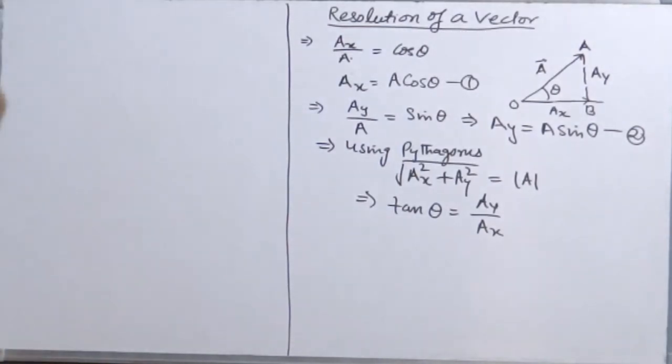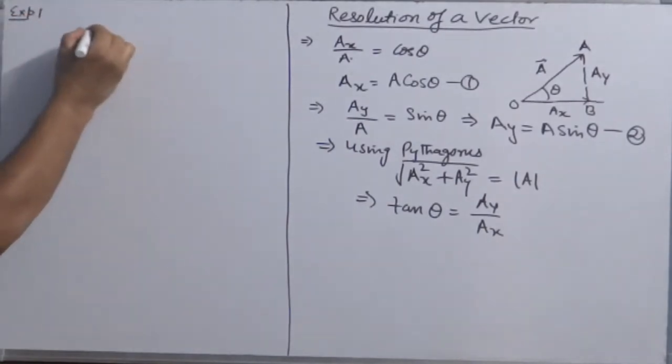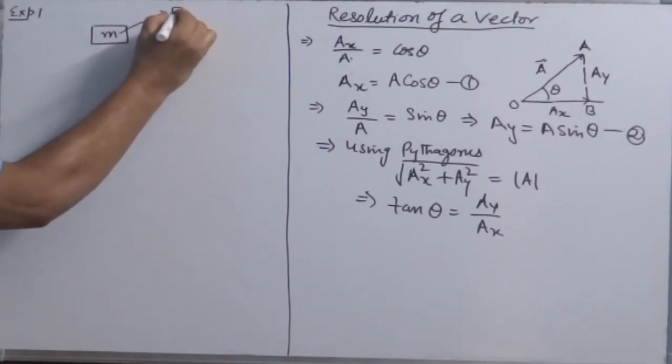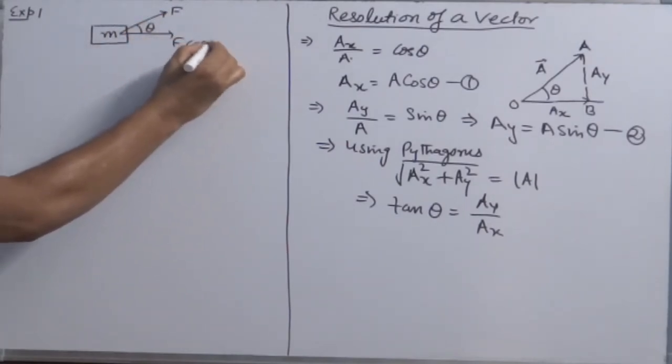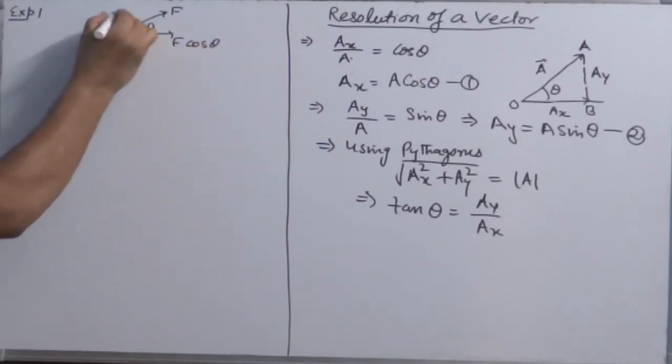Let's see examples in physics. Example number 1. This is an object. And if I want to pull an object of mass M, we always apply force in our day-to-day life with an angle theta. So we resolve this into two components: F cos theta and F sin theta.